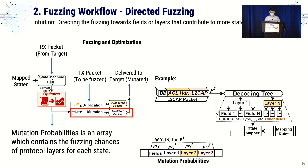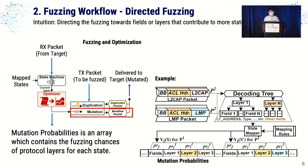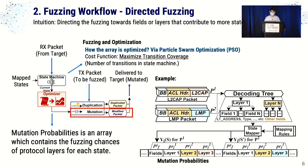For each packet, depending on its layers — for example, baseband, ACL, and L2CAP — there is an associated chance in the array to be mutated. For a different protocol packet such as LMP, there is a different position in the array. The optimization happens on this array using the PSO algorithm. The cost function is the number of transitions the device performed on the state machine, with the intuition of directing the fuzzing process so that particular layers can trigger the device to explore more communication states and eventually trigger a crash.